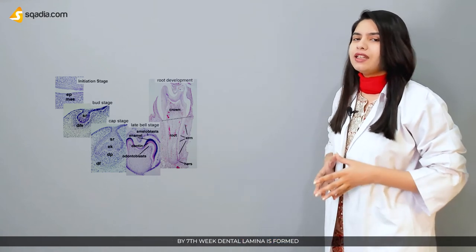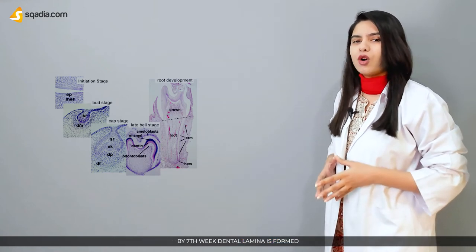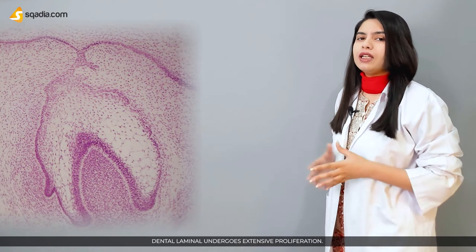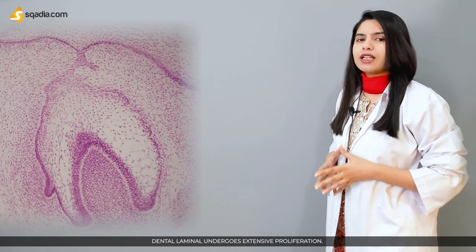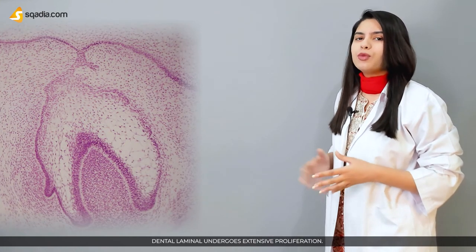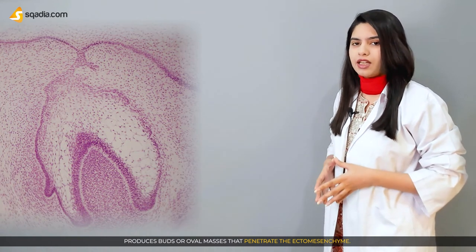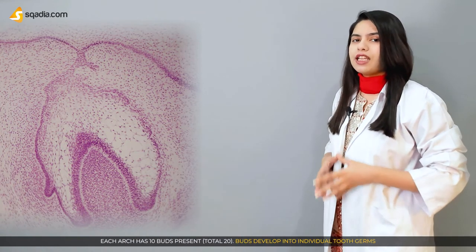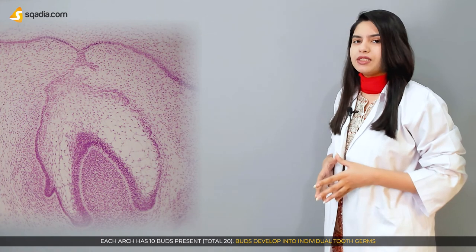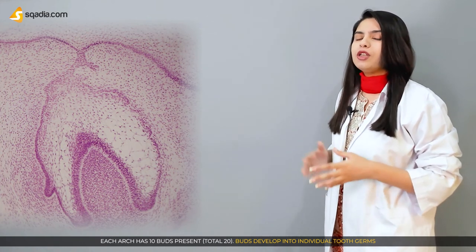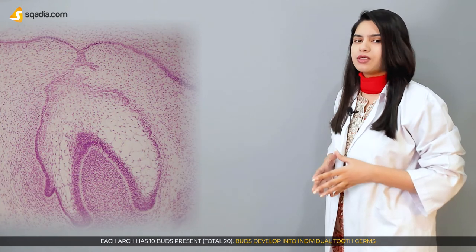By the 7th week, the dental lamina is formed. In the bud stage, the dental lamina undergoes extensive proliferation to produce buds or oval masses that penetrate the ectomesenchyme. Each arch has 10 buds present, making a total of 20 buds, which develop into individual tooth germs.